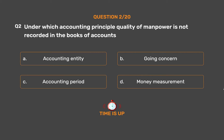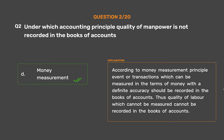The correct answer is Option D: Money Measurement. According to the money measurement principle, events or transactions which can be measured in terms of money with definite accuracy should be recorded in the books of accounts. Thus, quality of labor which cannot be measured in monetary terms cannot be recorded in the books of accounts.